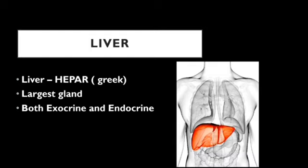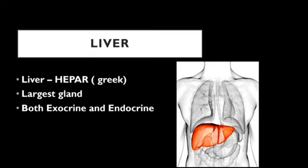The liver is a gland which has both exocrine and endocrine functions. The exocrine part of the liver carries out bile secretion, which is drained through the biliary pathways, stored in the gallbladder, and delivered to the small intestine whenever needed. The endocrine part secretes most of the plasma proteins, cholesterol helpful to produce steroid hormones, and also helps convert glucose to glycogen.